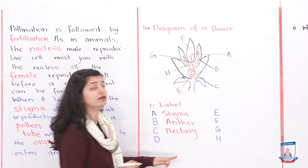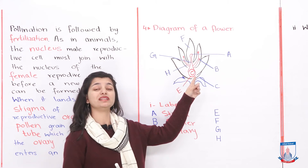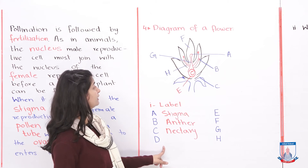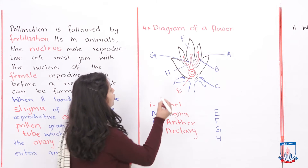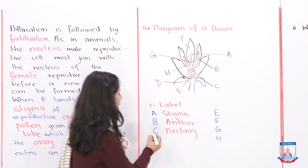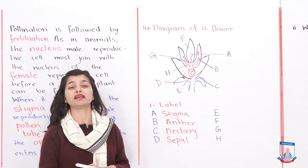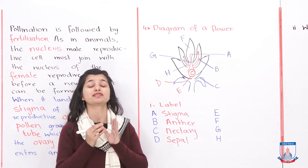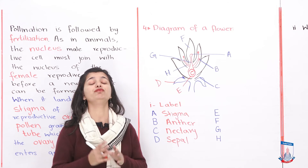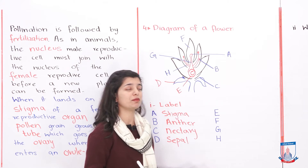The nectary is the place where nectar is produced, and it is attached near the pollen so that insects can suck it. Next, D is the sepal — the green covering you can see around the flower. The sepal protects the flower when it is in bud form, so it is a very important part.